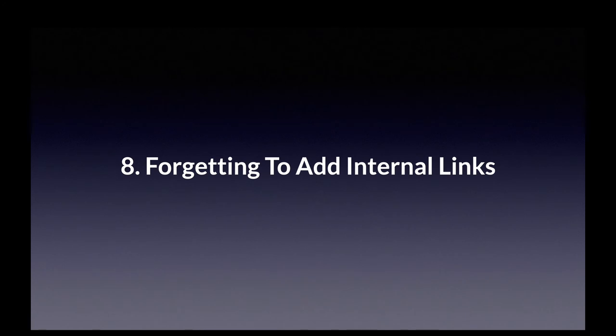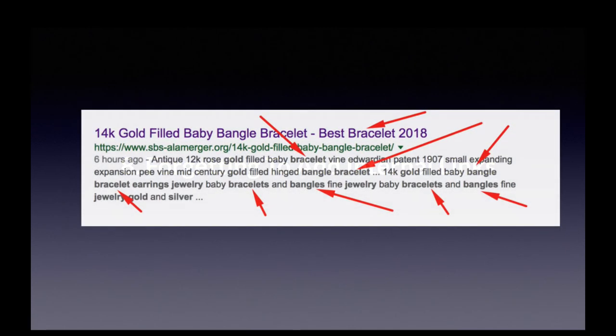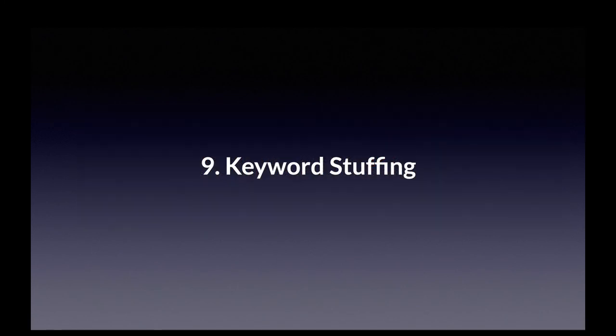SEO mistake number nine: keyword stuffing. Keyword stuffing had its heyday 15 or 20 years ago, but it's still around. This is the practice of loading your page and metatags with the keywords you want to rank for. It's a complete waste of time, as today's algorithms are based on context and semantic indexing, not keyword density. More to the point, keyword stuffing can trigger a Google penalty that's hard to recover from.